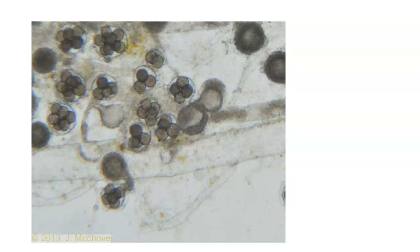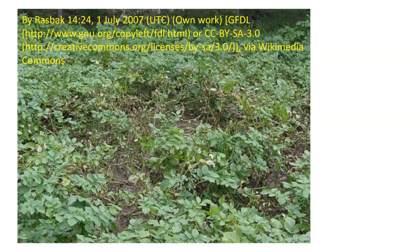These spores would then be able to be released and would start the production of new growths of this material. Some of these become important plant pathogens. This is potato. Potato suffers from a material that is called late blight.